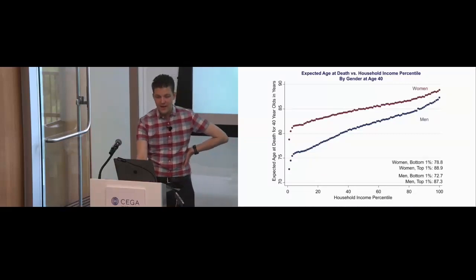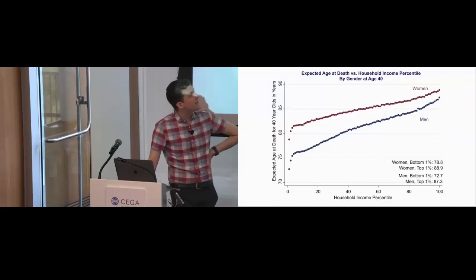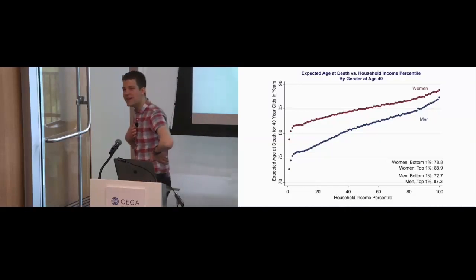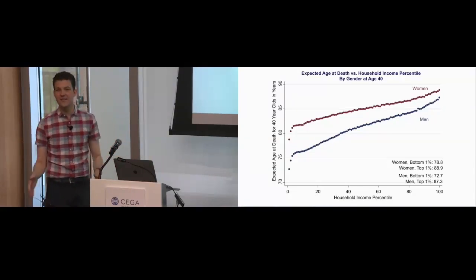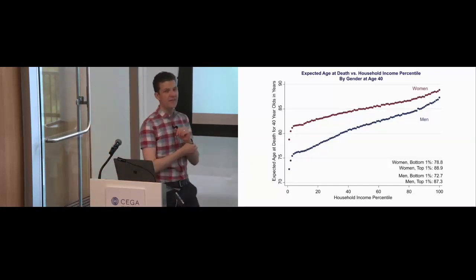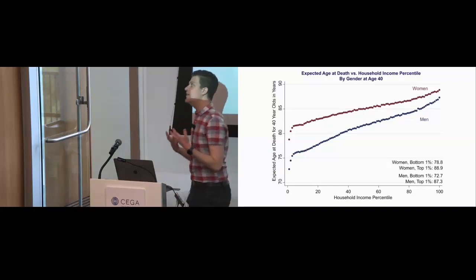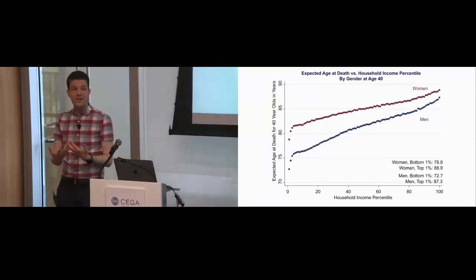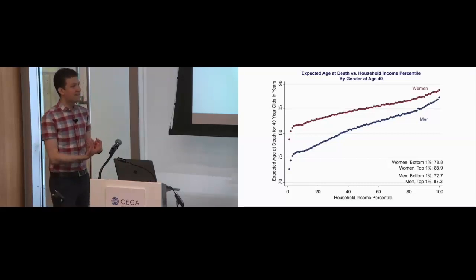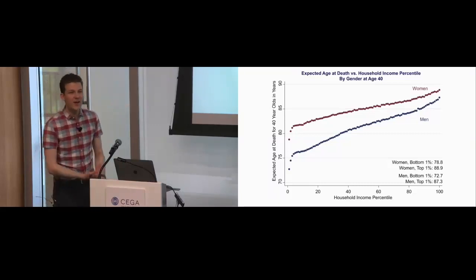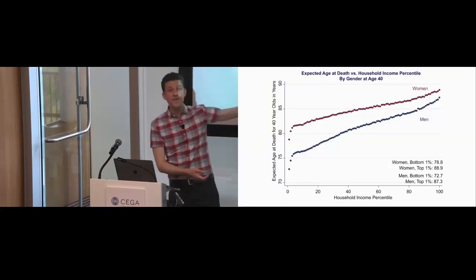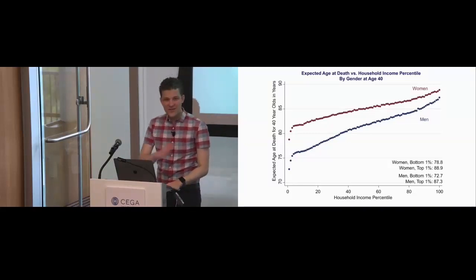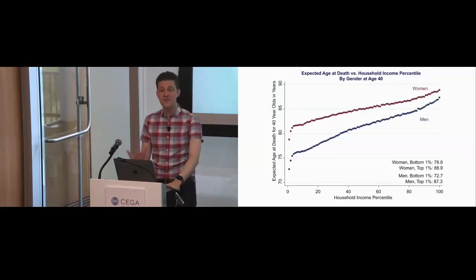If you look at women, there's a slightly smaller but still massive gap — about 10 years between the richest and poorest women. To put that in perspective, the gap in life expectancy between a lifetime smoker and a non-smoker is about 10 years. People with low incomes are not just experiencing inequality in terms of fewer opportunities — they also have fewer years on this earth, which is an extremely important dimension of individual well-being.